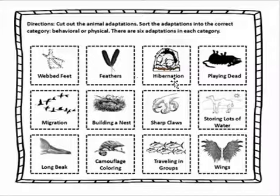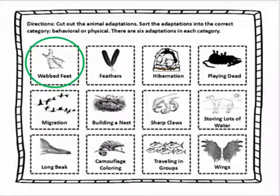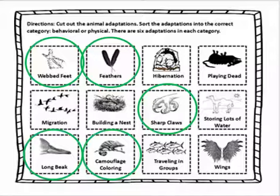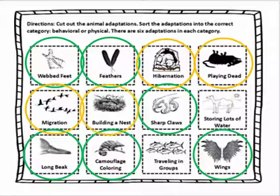Here are several different adaptations. Physical adaptations include webbed feet, feathers, sharp claws, long beak, camouflage coloring, and wings. Behavioral adaptations include hibernation, playing dead, migration, building a nest, storing lots of water, and traveling in groups. All of these things have the potential to help an individual of the species survive long enough to reproduce and pass on their genes to offspring, continuing the species so it doesn't go extinct.